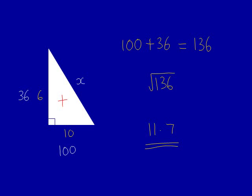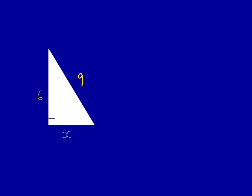We're now going to try another question, but this time it will be a take away. So here's our next question. We're given two sides, we're given 9 and 6 and we're asked to find the third side, x, at the bottom.